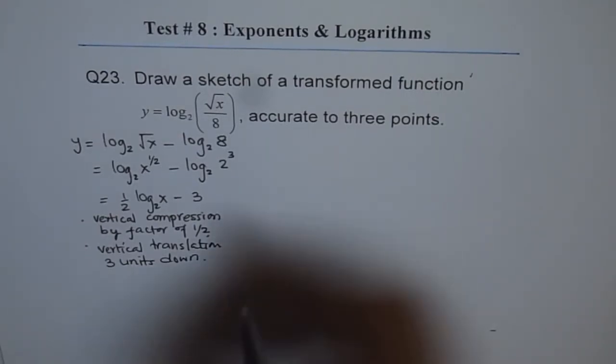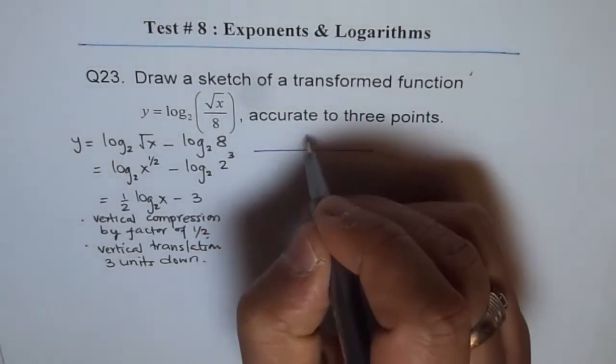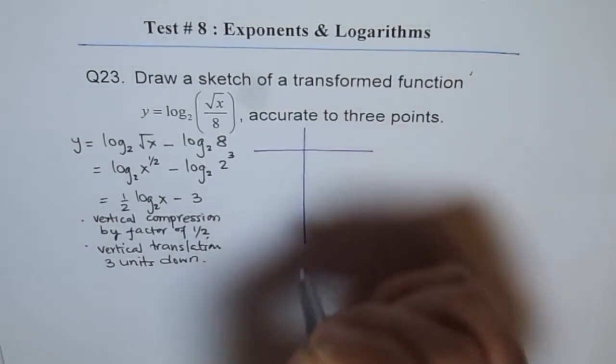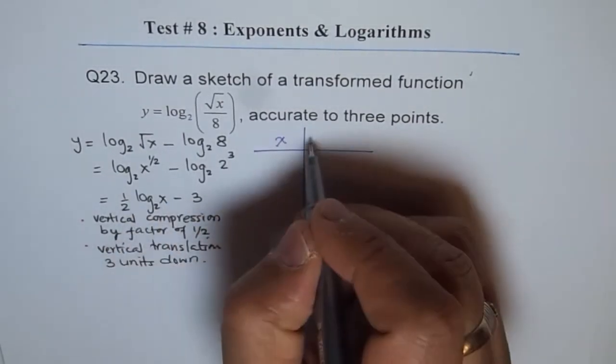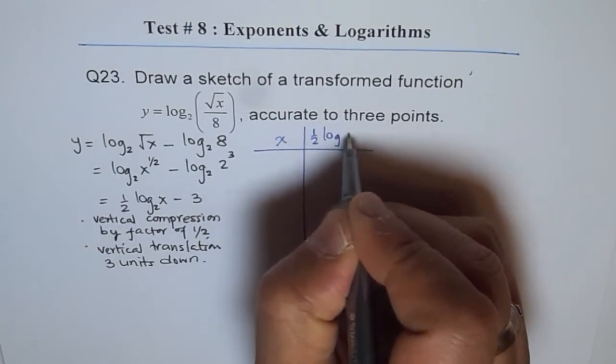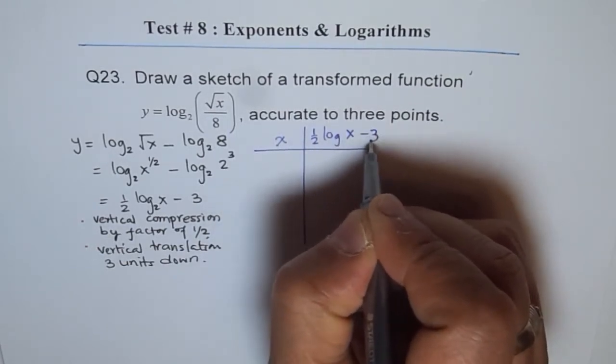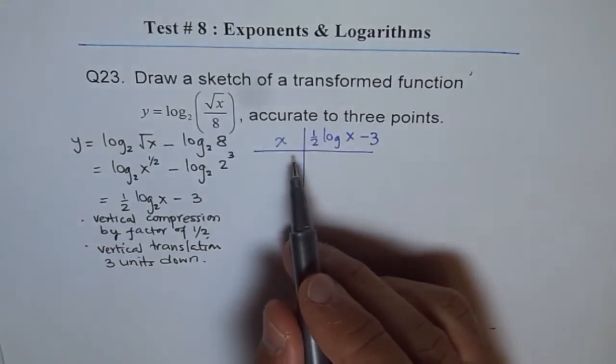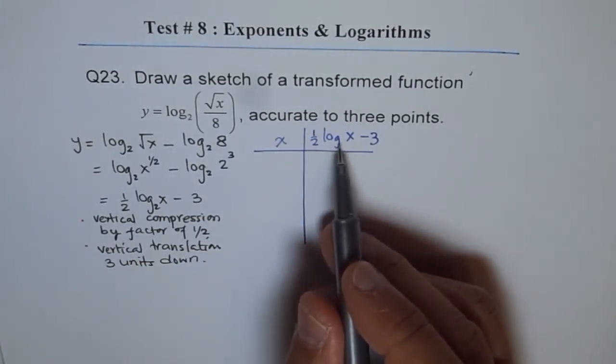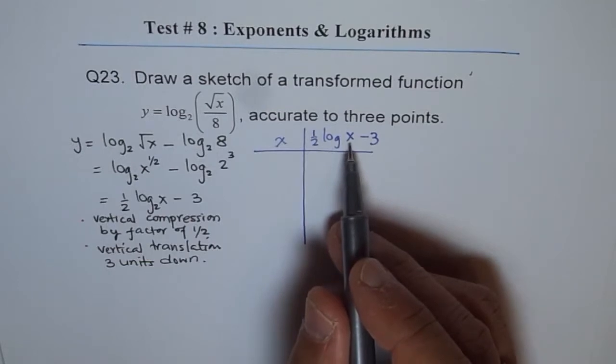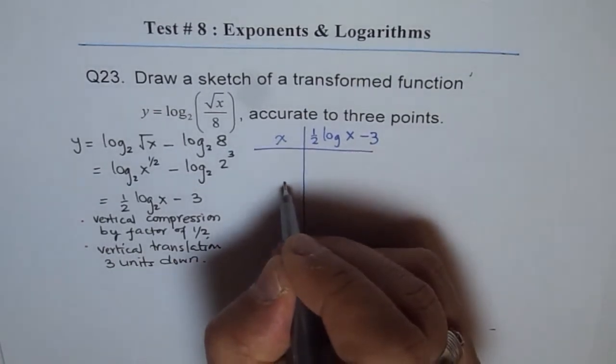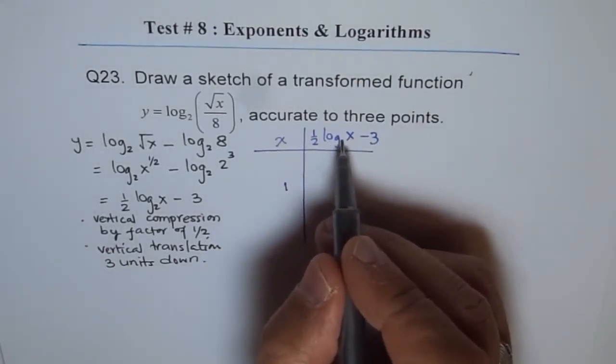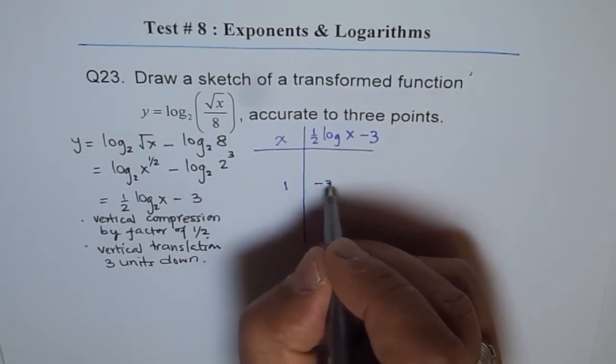So what we'll do is we'll make a table of values. We'll write this particular equation. We'll take some values of x and we'll have half of log₂(x) minus 3. Now, what good value should you take? You know log of 1 is always 0, so that is always the best value to take. So let's take x equals 1. In that case, log of 1 is 0, we get minus 3.